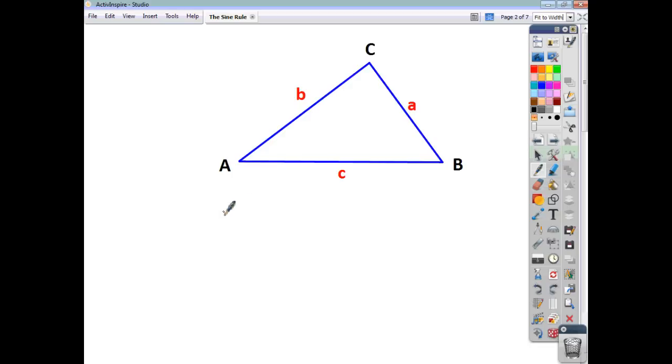Now, the sine rule is as follows. Side A over sine of the angle A is equal to side B over sine of the angle B and it's also equal to side C over sine of the angle C. So, the three ratios are equal to one another.